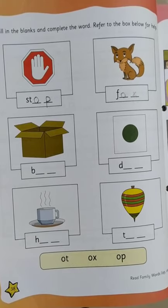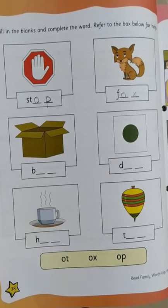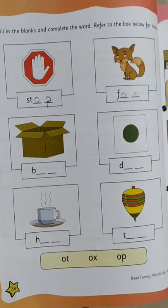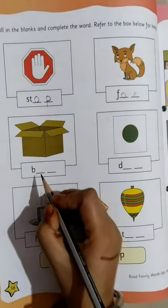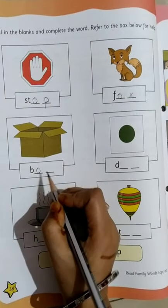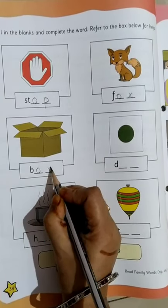Moving on to the next one. Can you see a box? A carton box? B is already written. What will you write? Ox. So O and X. Box.